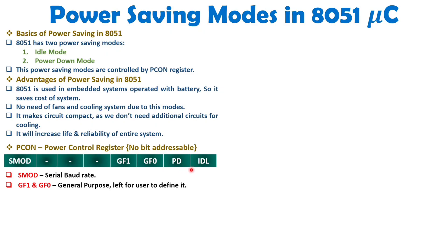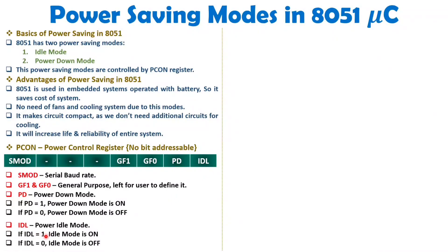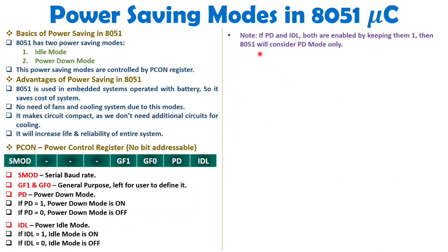For power saving we use two bits: PD and IDL. When you make PD equal to 1, you will be turning on power down mode; if it is 0, power down mode is off. To turn on idle mode, make the IDL bit equal to 1; if it is 0, idle mode is off. If both PD and IDL are 1, the 8051 will consider power down mode only.